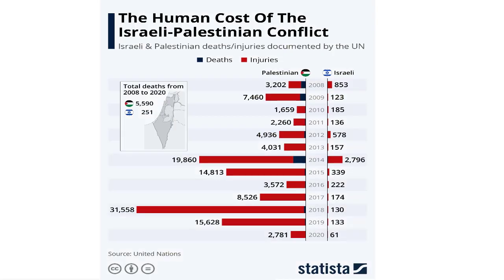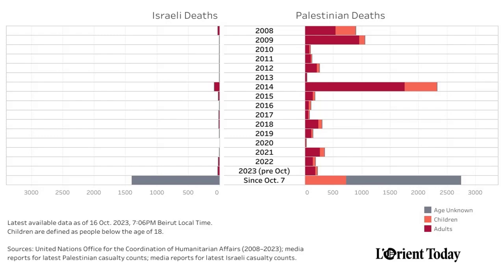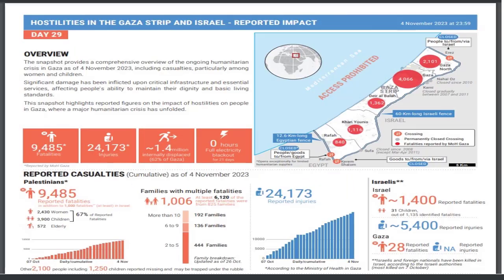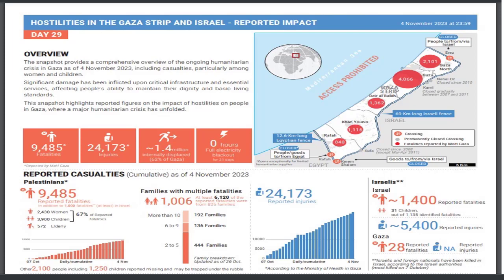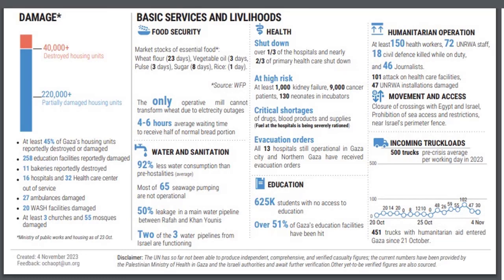Looking at some of the human costs historically, we can see that it has been hugely outweighed toward Palestinian losses relative to Israeli losses. This conflict will probably be the worst in recent memory. Here's a chart showing the current status — about 9,900 is the latest figure, though this is a changing number. We also look at food security, displacement, 40,000 housing units destroyed, 220,000 partially damaged homes, and different things that have been destroyed. These numbers are devastating.